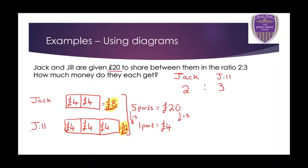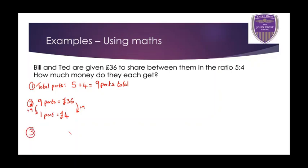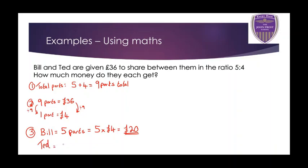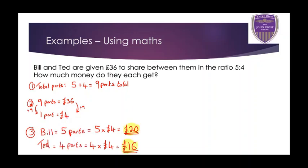Now for step 3 — let's find out how much Bill and Ted each get. Bill gets 5 parts in the ratio. So we do 5 times 4 pounds, which is 20 pounds — Bill gets 20 pounds. Ted gets 4 parts, so we do 4 times 4 pounds, which is 16 pounds. Double check: does 20 and 16 add up to 36? Yes it does. So Bill gets 20 pounds and Ted gets 16 pounds.